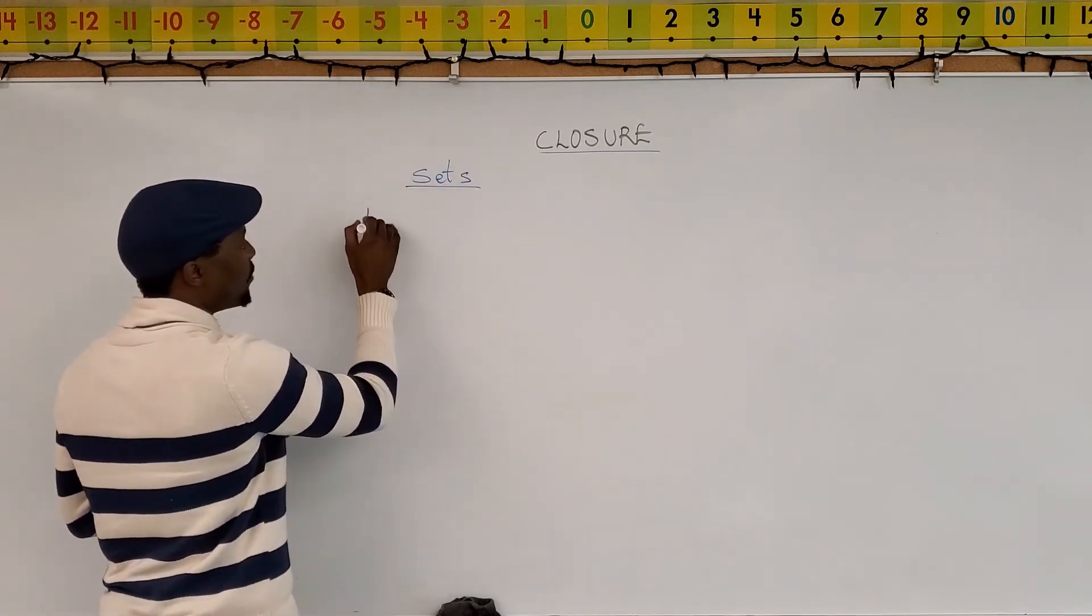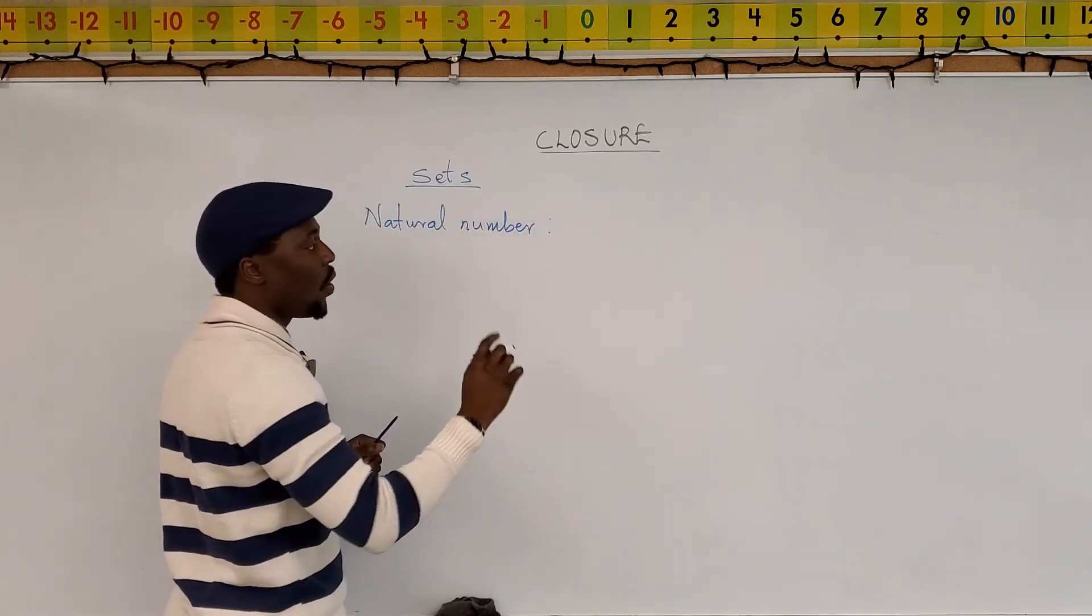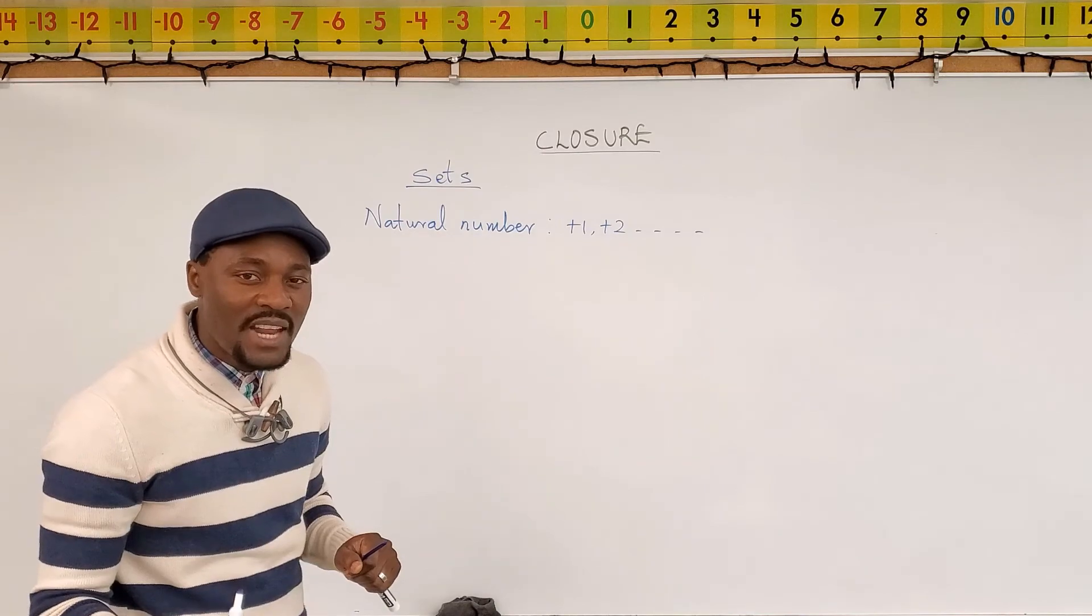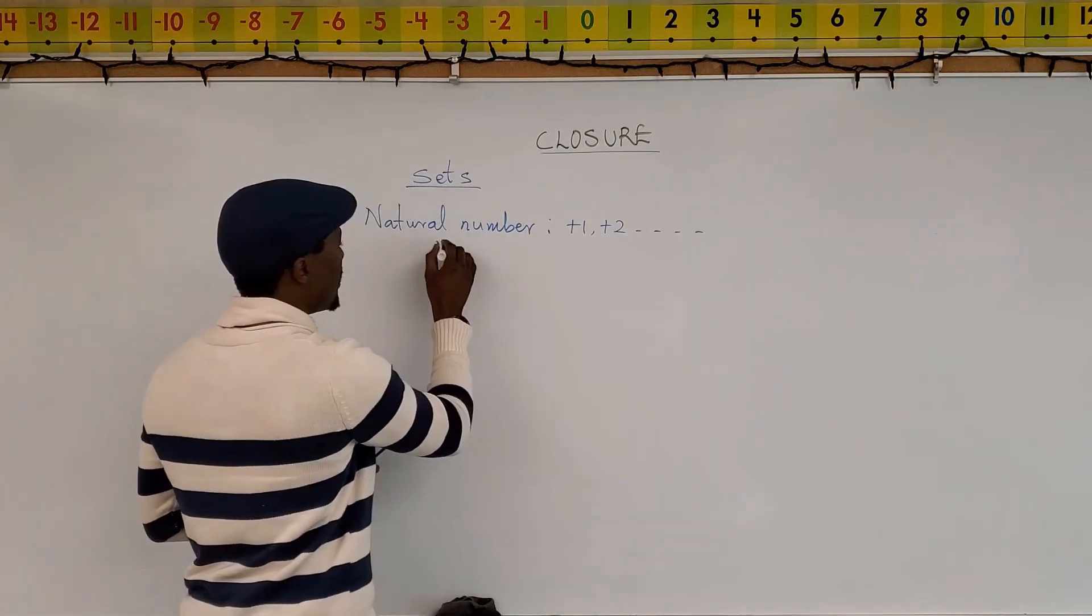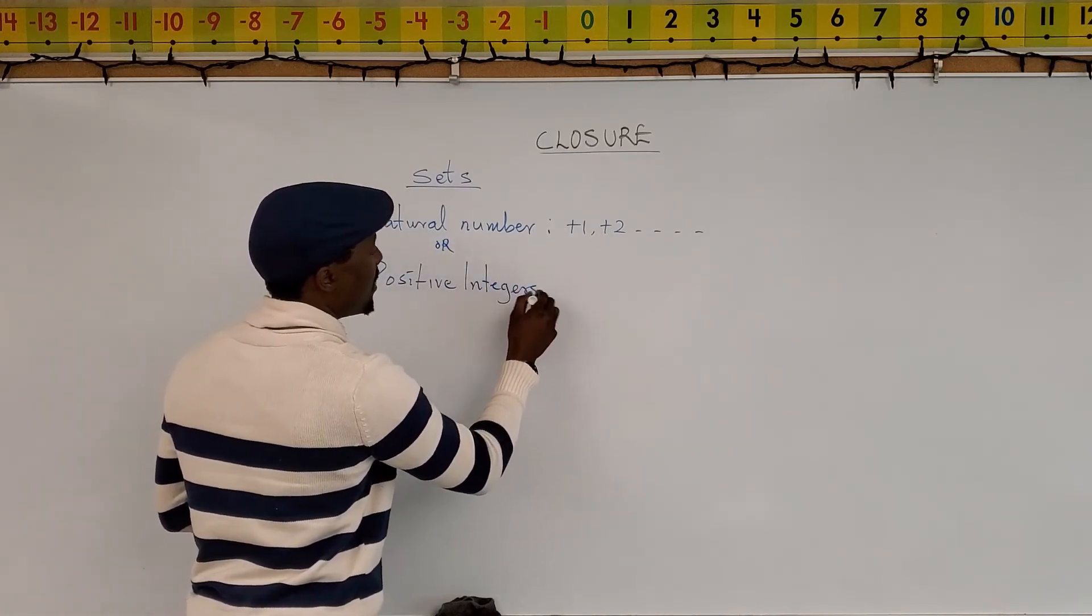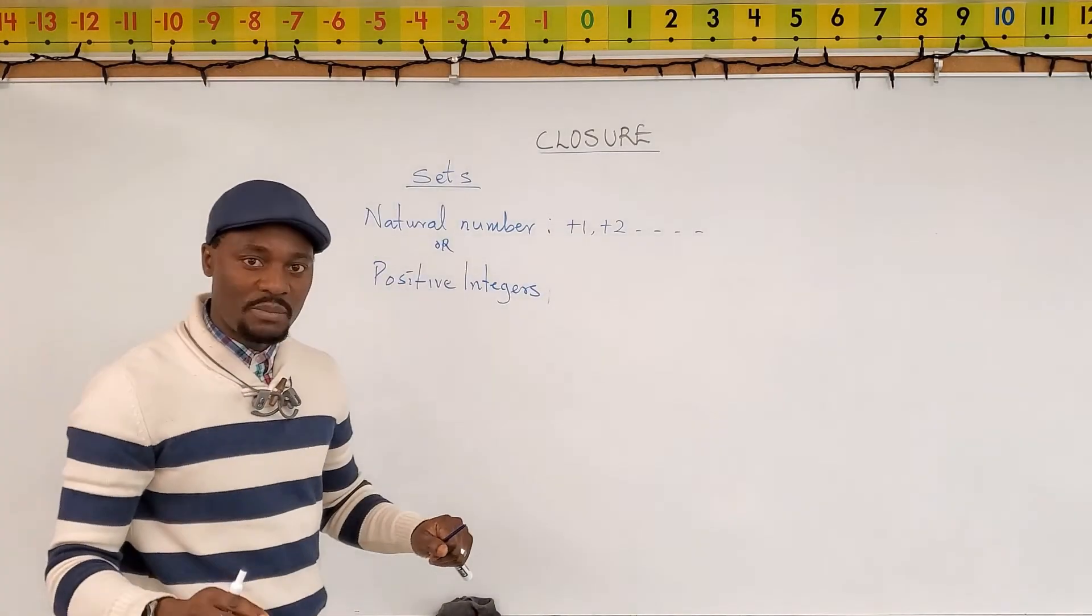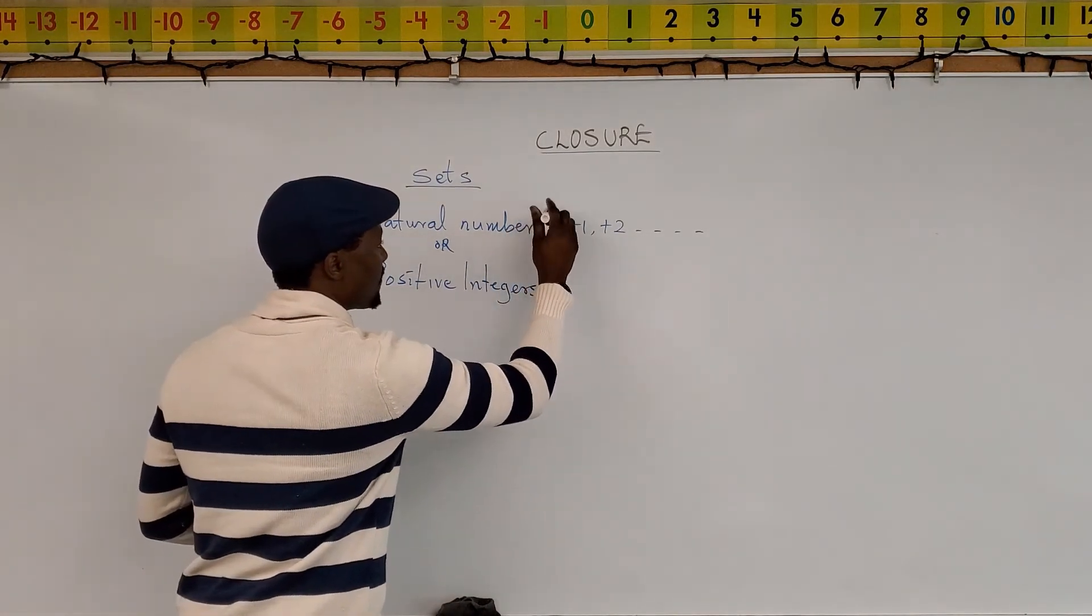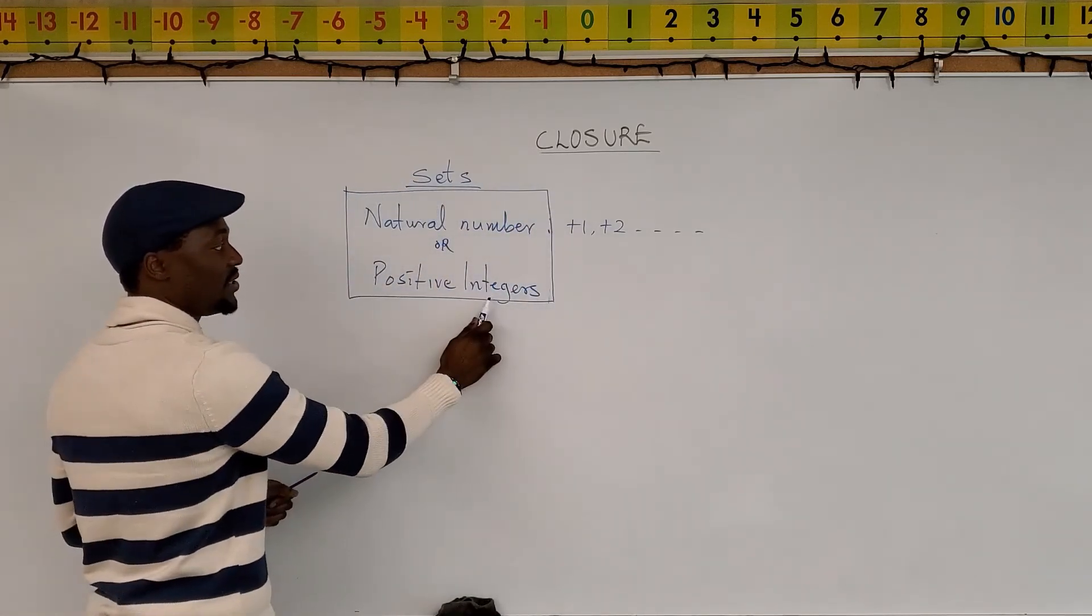Sets, number one, we call them natural numbers. Natural numbers are all numbers starting from positive one, positive two, all the way. They have another name. Another name is positive integers. So all these are also called positive integers. So natural numbers are positive integers. Please do not refer to them as whole numbers because these numbers are not the set of whole numbers. They're a set of positive integers or the set of natural numbers. So this set you have here, same set, just two different names, positive integers or natural numbers.